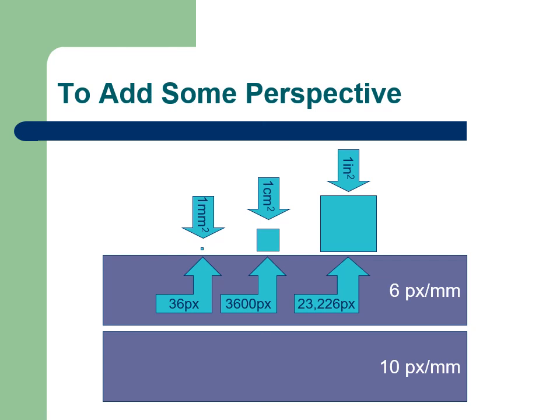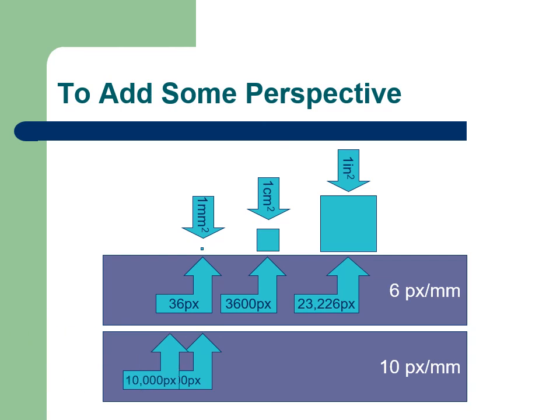To add some scale regarding what happens when pixel count increases, at a pixel density of 10 pixels per millimeter, the one millimeter box contains 100 pixels, the centimeter box about 10,000 pixels, and the square inch box about 64,516 pixels.